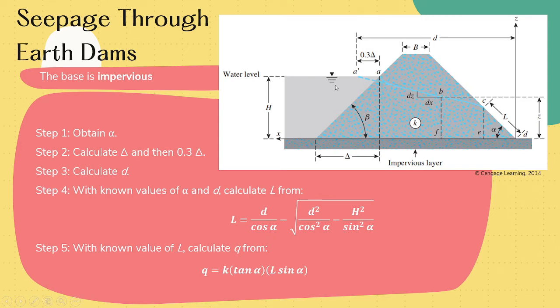The first step in calculating the seepage through earth dams with an impervious base is to calculate the angle alpha. Angle alpha is the angle of the toe or the inclination with respect to the flat impervious layer.